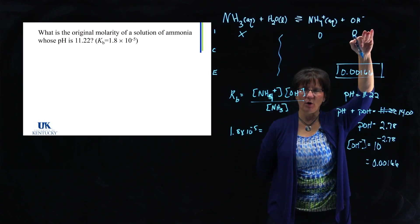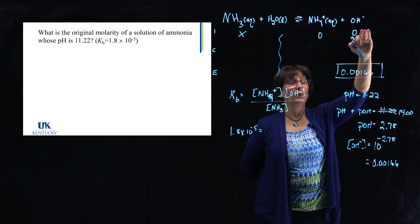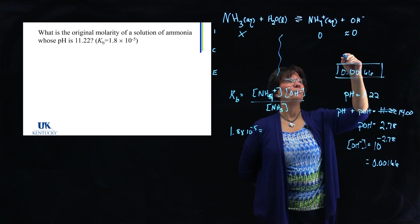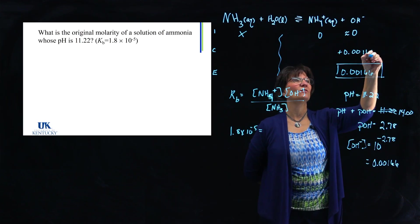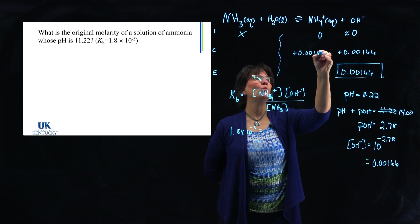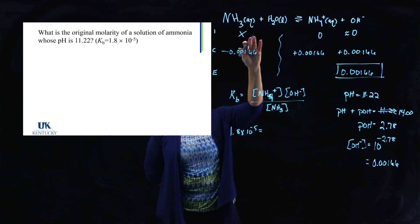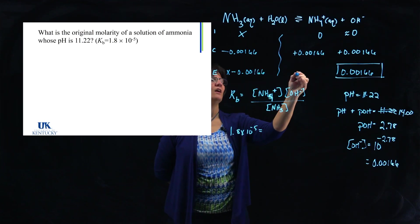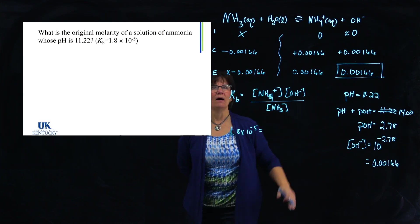I can come up here and plug that in. That is its concentration at equilibrium. Now, since this is essentially 0, it's 1 times 10 to the minus 7, it's very, very small. We can approximate it with 0 in most cases. So we start with 0, and we formed this amount, so we must have produced 0.00166. If we produced that there, then we also produced it here, and we used it up on the reactant side. So this becomes X minus 0.00166, and this is 0.00166.